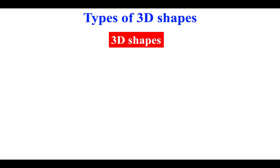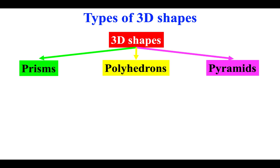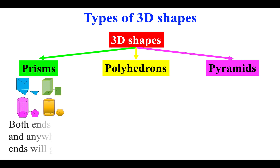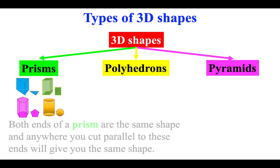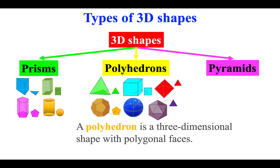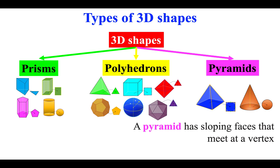There are three types of 3D shapes: prisms, polyhedrons, and pyramids. Both ends of a prism are the same shape, and anywhere you cut parallel to these ends will give you the same shape. A polyhedron is a three-dimensional shape with polygonal faces. A pyramid has sloping faces that meet at a vertex.